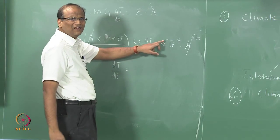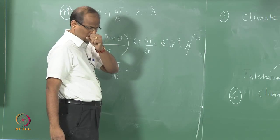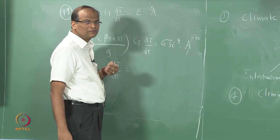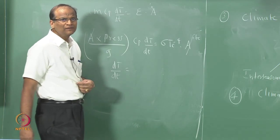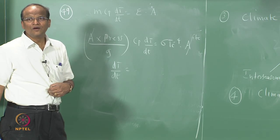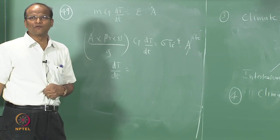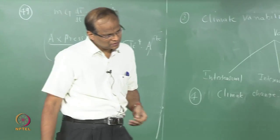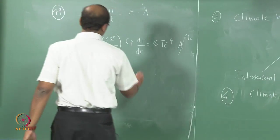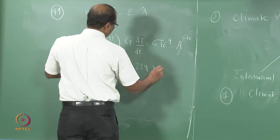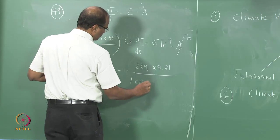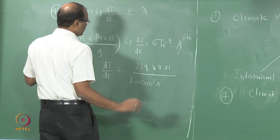How much is 239? No — sigma T to the power 4: 255 is the temperature, so 255⁴ × 5.6 × 10⁻⁸ equals 239 watts per meter square. Then multiply by 9.8 over Cp.